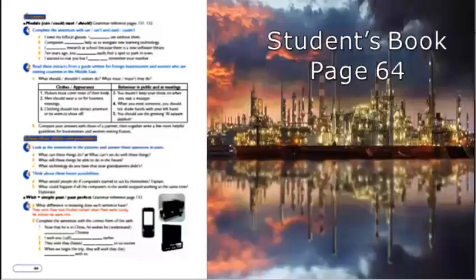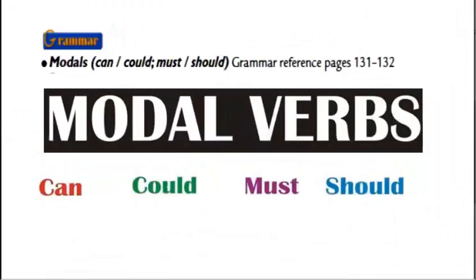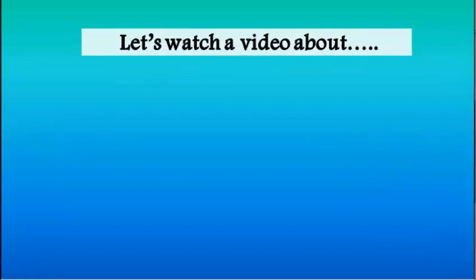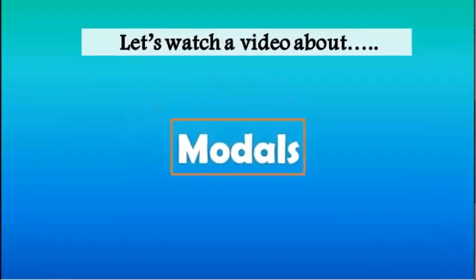Please open your book to page 64. In this page, you have the first exercise, which is about grammar — more specifically, modals. We have to know the difference between can, could, must, and should. At the end of your book, you have a grammar reference on pages 131 and 132. You can read more about these modals. But first, let's watch a video about modals — can, could, must, and should — and I'll be back in a minute.